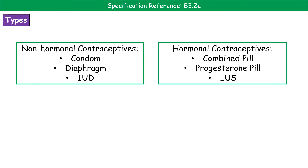Here are some examples you should learn. Non-hormonal contraceptives are our barrier methods: condoms, diaphragms, and the IUD. Whereas the hormonal contraceptives include our two types of pill — combined and progesterone — and the IUS. Be careful not to mix up IUD and IUS, because one is hormonal and the other non-hormonal.